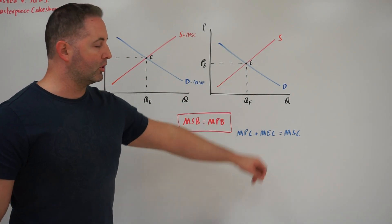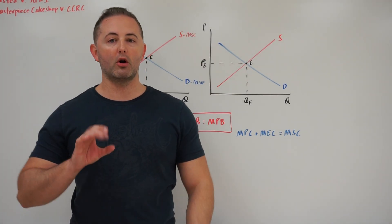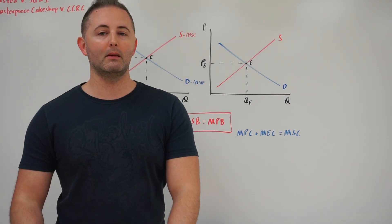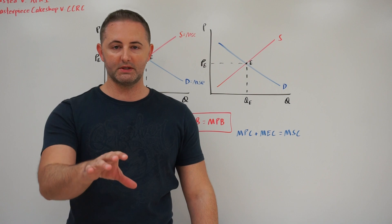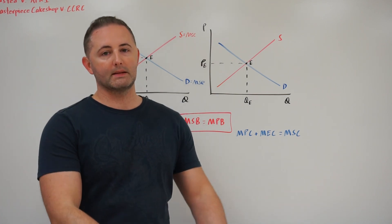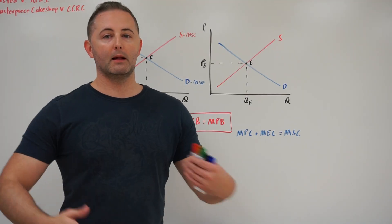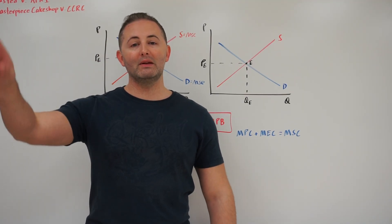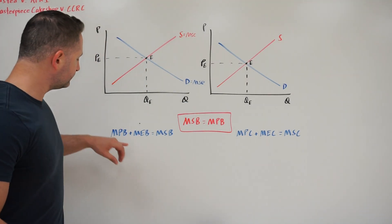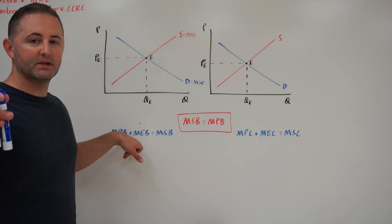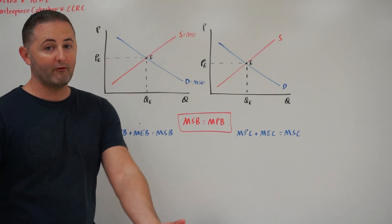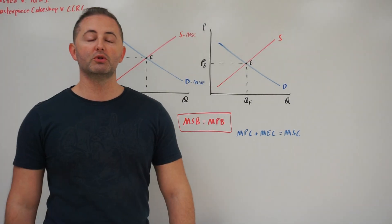Then we have something called external costs and benefits. From previous videos, you've already been introduced to these terms. This is when there is some kind of additional benefit that accrues to other people as a result of your purchase of that good. So you get a flu shot and then other people are less likely to get the flu because you're less likely to spread it. So there is a benefit to them of you getting a flu shot — that's an external benefit. So when we take the marginal private benefit — the benefit you receive for buying that good — plus the marginal external benefit, the benefit other people get from you having bought that good, that gives us the marginal social benefit.